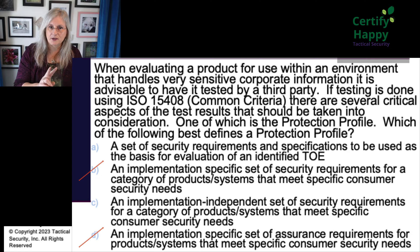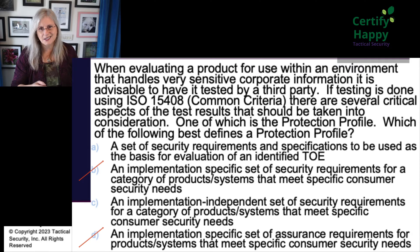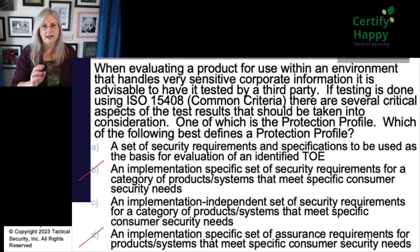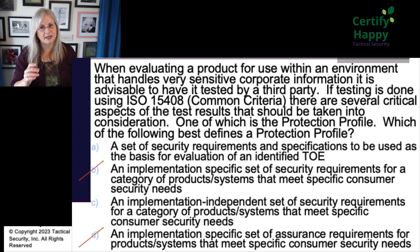Once you eliminate two answers, you want to go back and re-read the question to make sure you're still thinking about the right thing. Which of the following best defines a protection profile? As you can see, you don't really need to read the rest of the question on the test — always do, just in case. Now the question is what's different between A and C. A is 'a set of security requirements and specifications to be used as the basis for evaluation of an identified TOE, target of evaluation.' That doesn't sound bad.